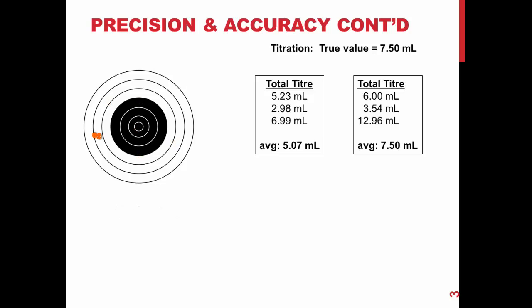In this example, the set of throws shows high precision but low accuracy, as they are all close to one another but nowhere near the bullseye.